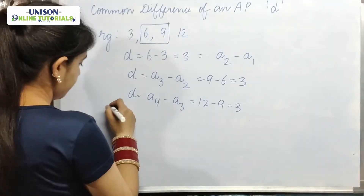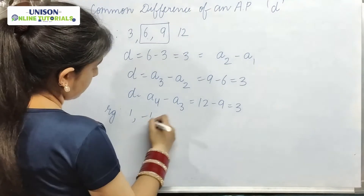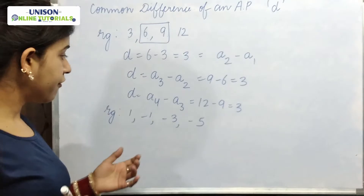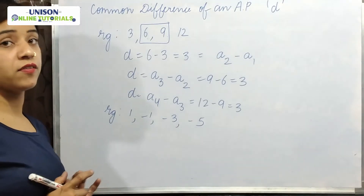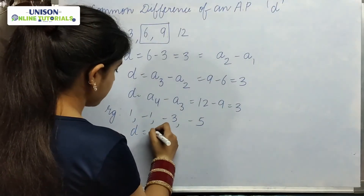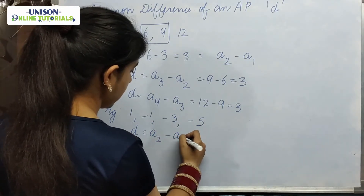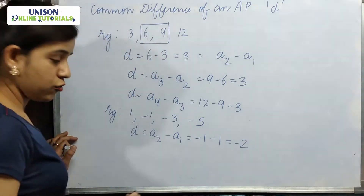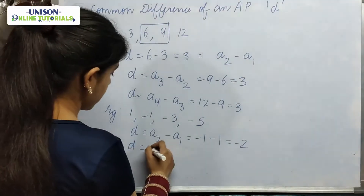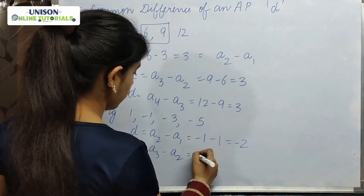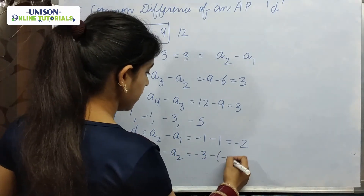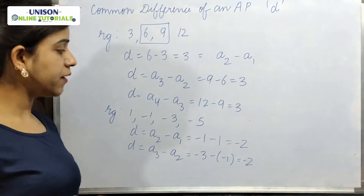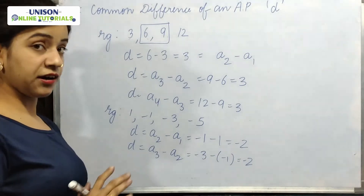Let us take another example: 1, -1, -3, -5. We have to find the common difference of this AP. Common difference is a2 minus a1: -1 minus 1, which equals -2. Again, a3 minus a2 also gives -2. So in this case, common difference is -2, which is a negative number. In the previous case, common difference was a positive number.